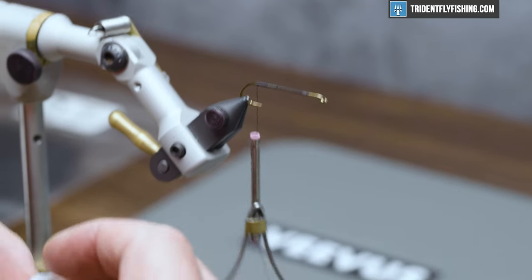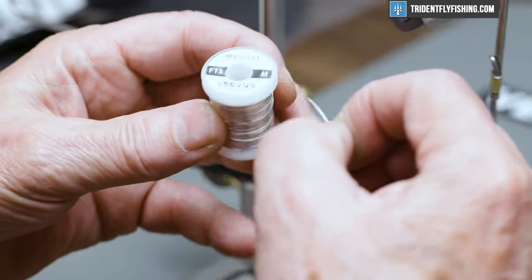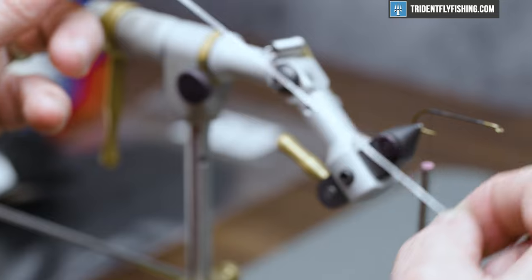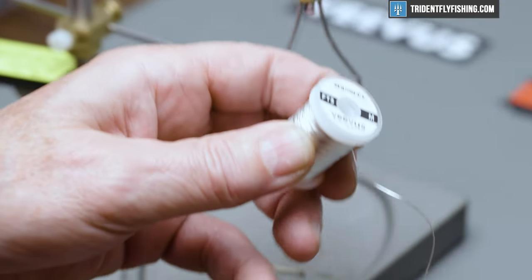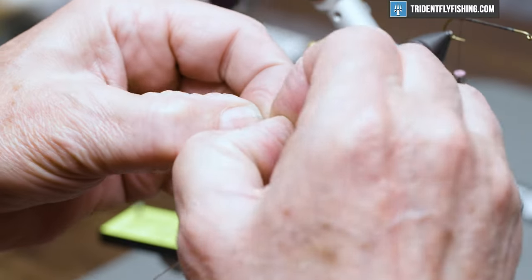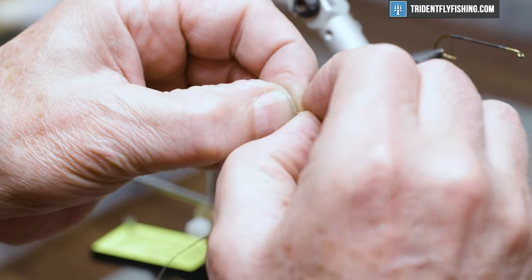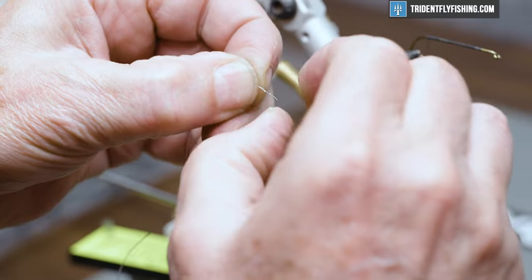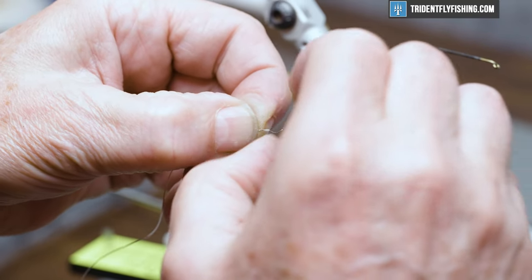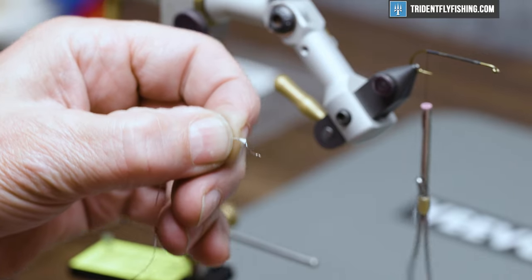The first material we're going to tie in is going to be our rim. This is some Vivas French oval tinsel in silver. So to keep our tie in point small, I'm going to strip away some of the tinsel around the core, which will give me some fiber to tie in.